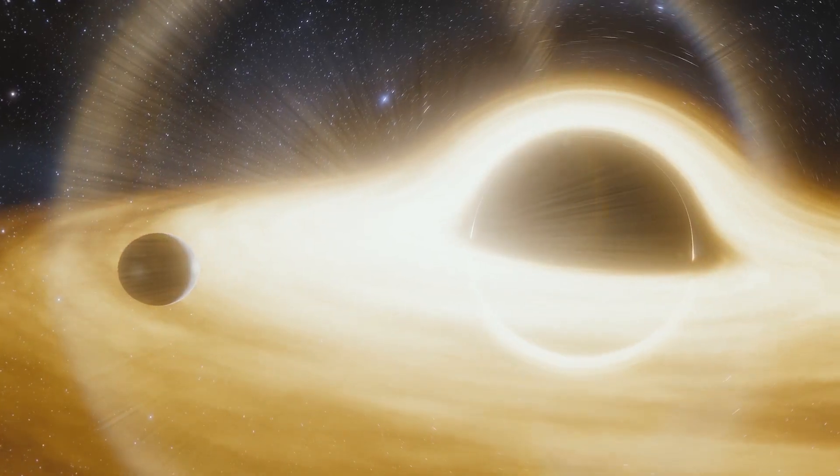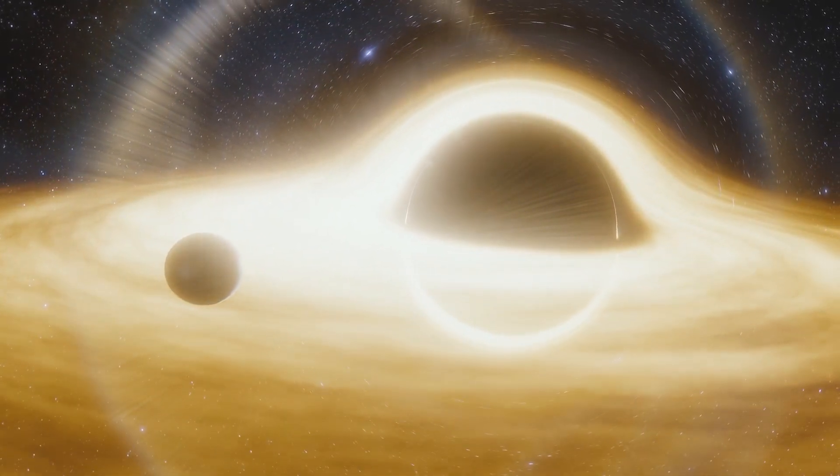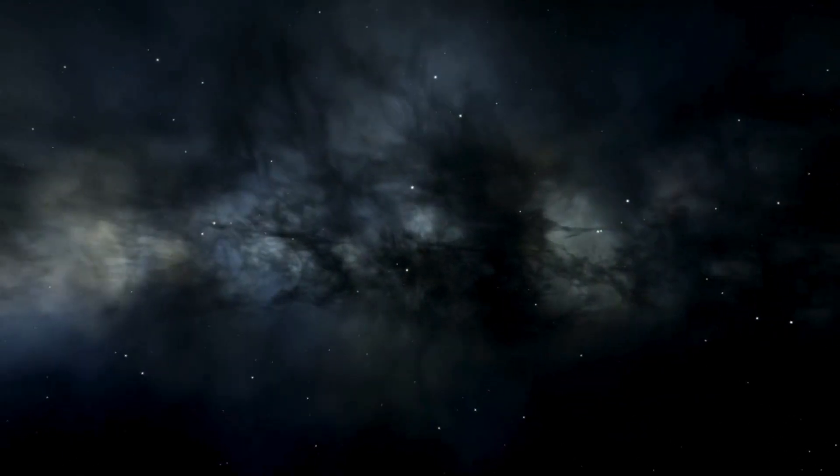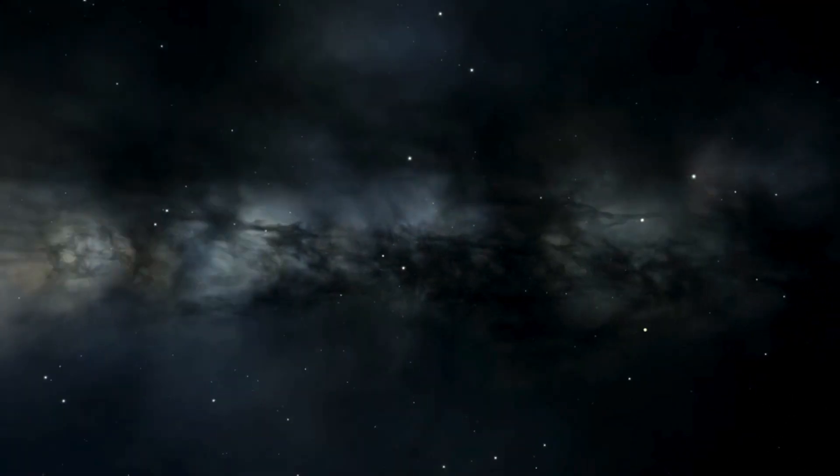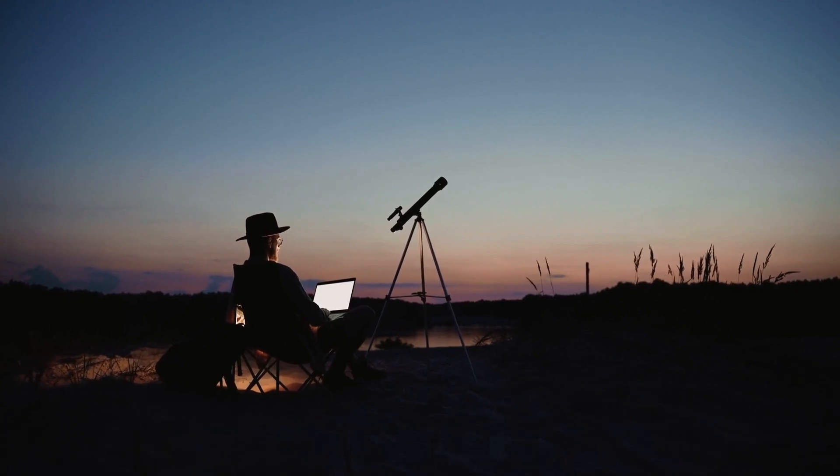On one hand, general relativity suggests that information falling into a black hole disappears beyond the event horizon. On the other hand, quantum mechanics insist that information must be conserved. How can these two fundamental theories of physics coexist when they seem to give conflicting answers?